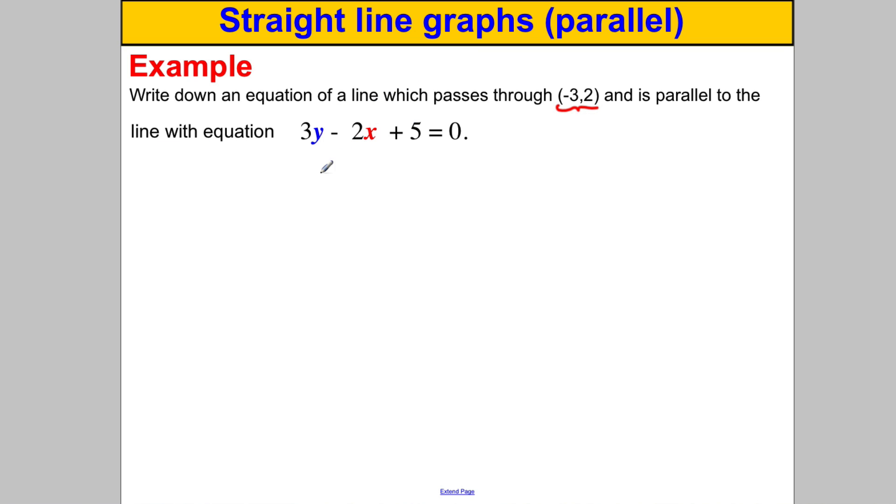Now we can't tell what the gradient is by looking at that straight off. We need to put it in the form Y is equal to MX plus C, so we're going to need to do a bit of rearranging. So let's add 2x to both sides and take away 5 from both sides in order to isolate the Y or leave the Y by itself on the left.